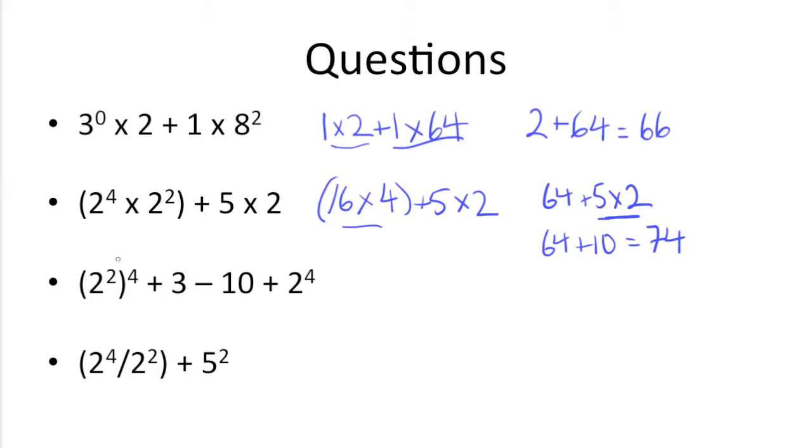All right, on to the next question. We've got 2 squared to the 4th power plus 3 minus 10 plus 2 to the 4th power. So going by the order of operations, we would want to do the parentheses first, which is 2 squared, which gets us 4 to the 4th power.